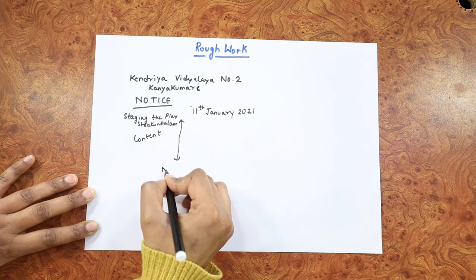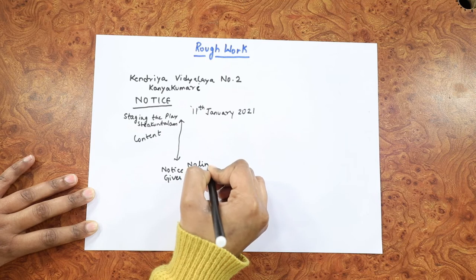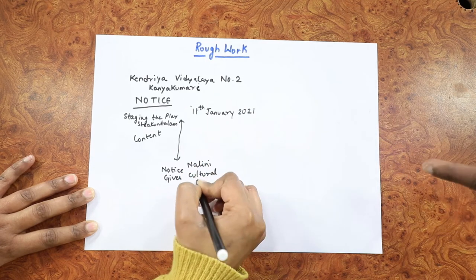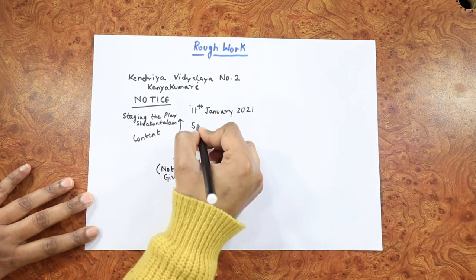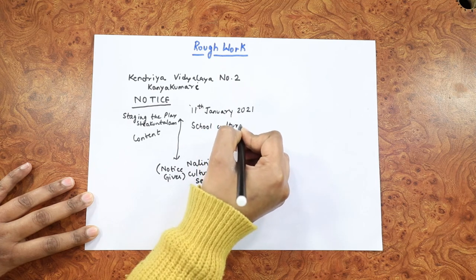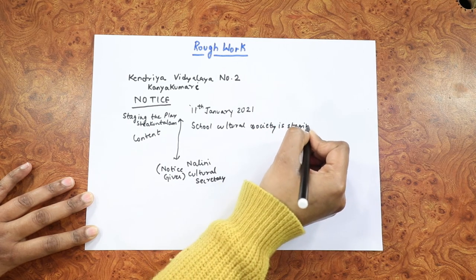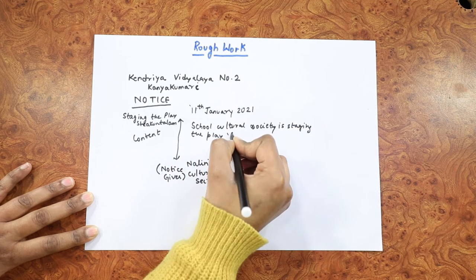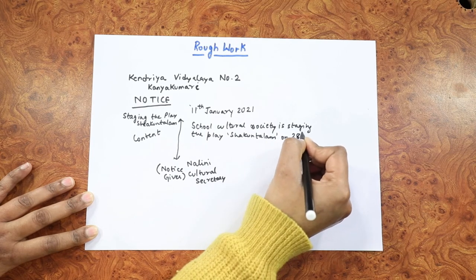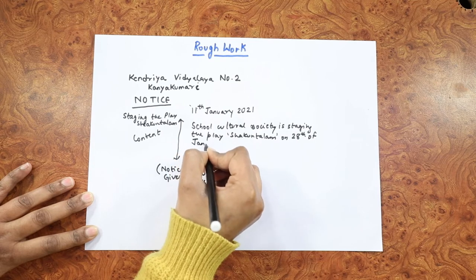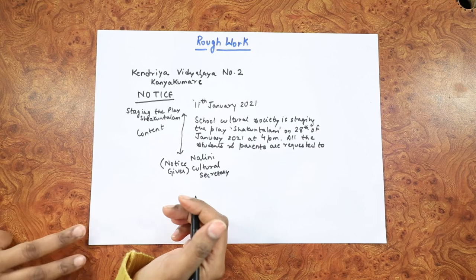And the notice giver — at the end I will write down Nalini, cultural secretary. Now write the body also to some extent. I can say: school cultural society is staging the play Shakuntalam on 28th of January. Kriti and learners, I think the rough work has brought in everything. Kriti has included the headings, the event heading, the body of the notice, and the notice giver. Now let us write the fair and final one.